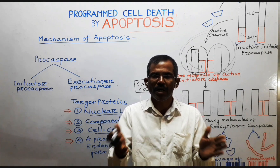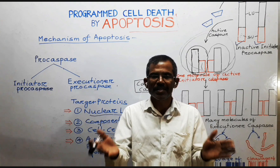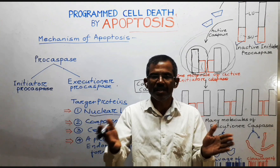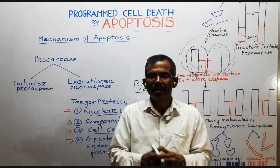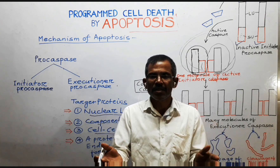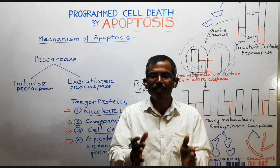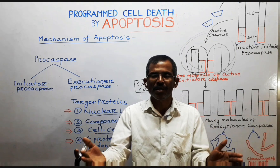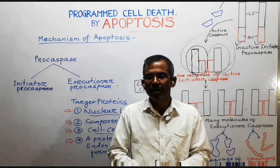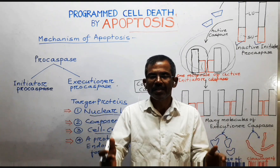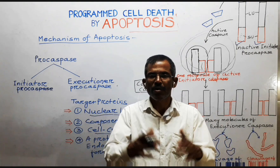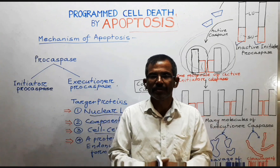They cleave each other, making the process irreversible. The initiator Procaspases then cleave and activate the downstream executioner Procaspases, resulting in initiation of the caspase cascade and amplification of the death signal throughout the cell.